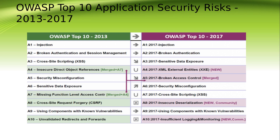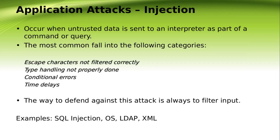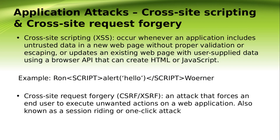This comparison shows injection ranked number one in 2017 and how it has changed. Application attacks — injections: these occur when untrusted data is sent to an interpreter as part of a command or query. The most common fall into categories: escape characters not filtered correctly, type handling not properly done, conditional errors, and time delay. The best defense is always to filter input — examples include SQL injection, OS, LDAP, and XML injections.